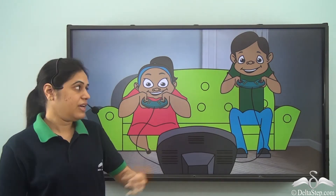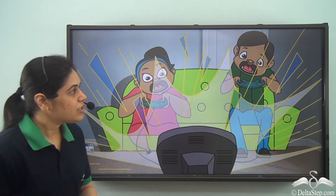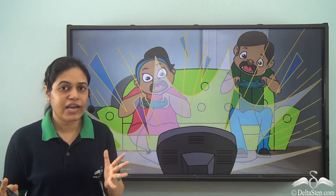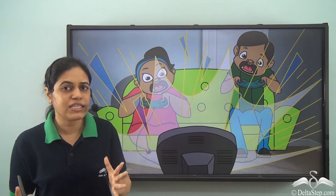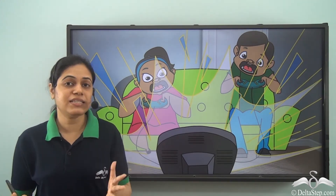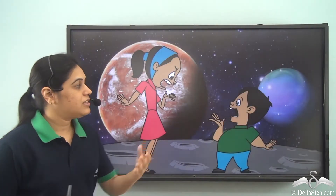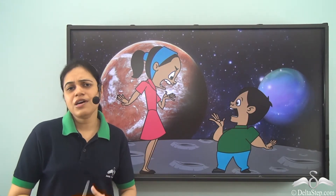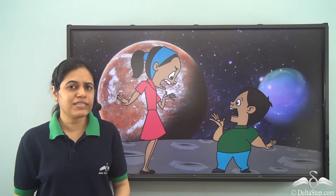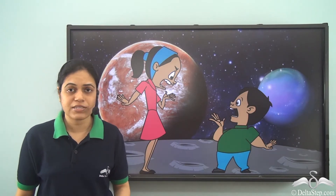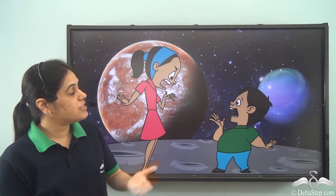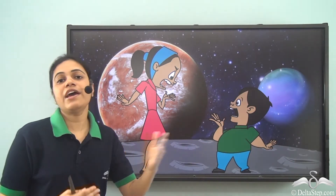So one day when they were playing a video game, there was a sudden bright spark of white light and it was so bright that they closed their eyes. It blinded them and when they opened their eyes they were at a completely different, unknown place. They were very scared and they were even more scared to see how they had become.